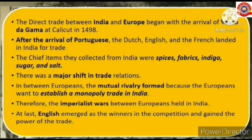Mutual rivalry formed among the Europeans because they wanted to establish a monopoly trade in India. Therefore, imperialist wars between Europeans were held in India. At last, the English emerged as the winners in the competition and gained the power of the trade.